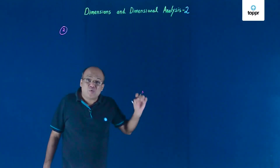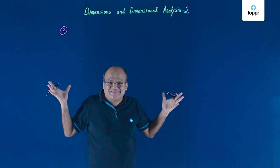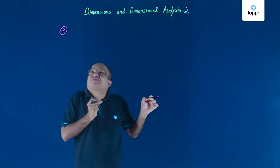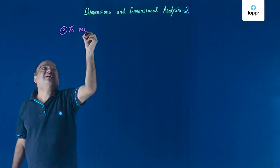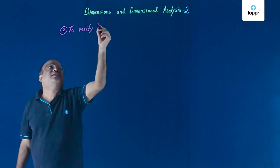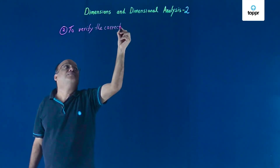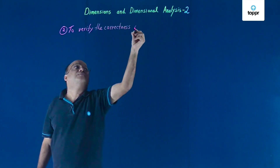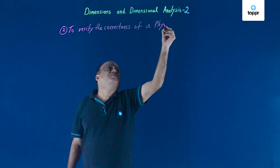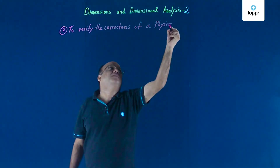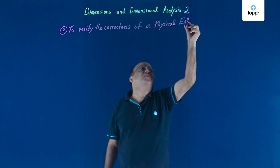Now we are going to learn one more use of dimensional analysis — a very useful use: to verify the correctness of a physical equation. Suppose you have been given some equation and you want to check whether it is correct or not.